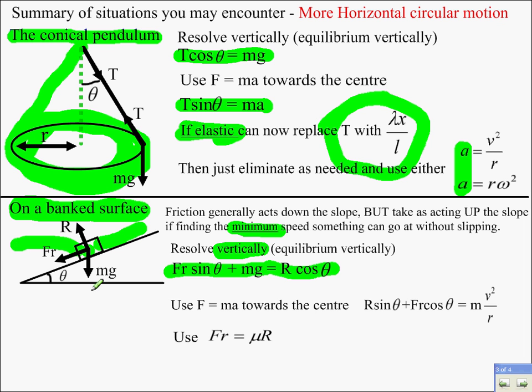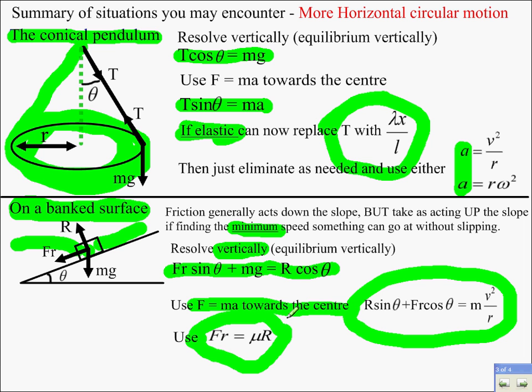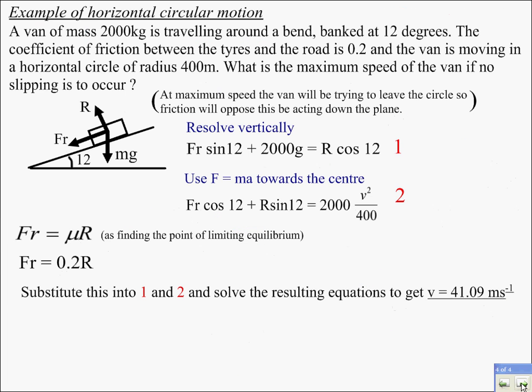Vertically, though, there's no component of acceleration vertically. The forces are equal. So, the component of friction and reaction against weight here are all equal. Then, use F equals ma towards the centre as always. So, you've got this equation as well. And, use friction equals μR. You'll be in limiting equilibrium. And, between those three equations, rearrange and get whatever you need.